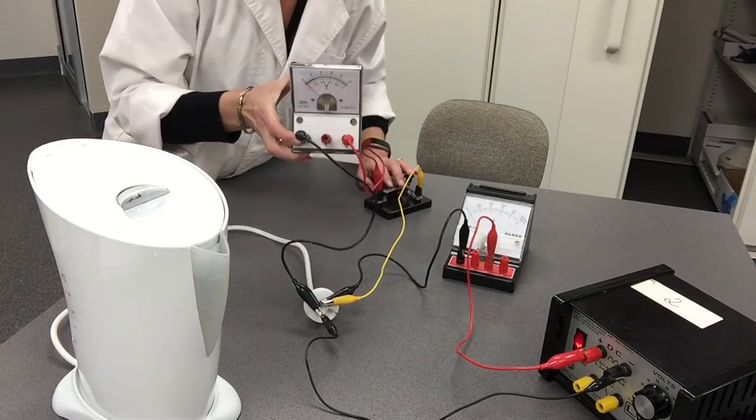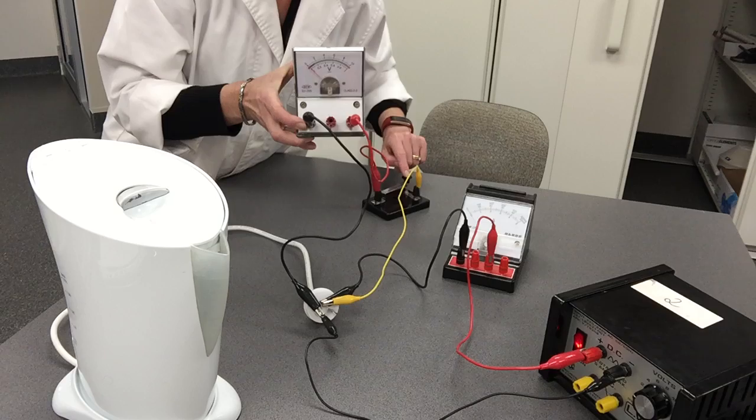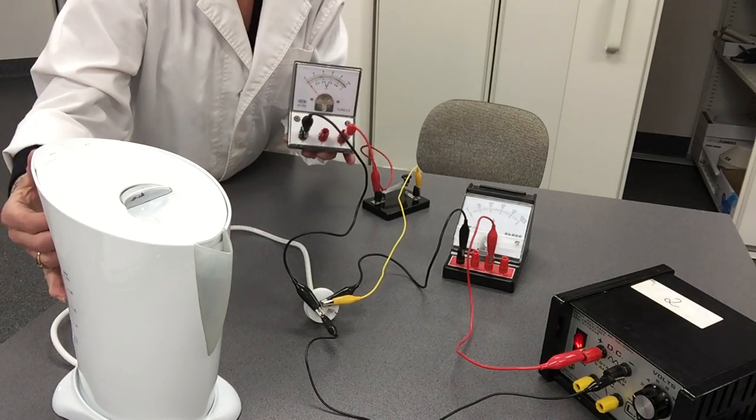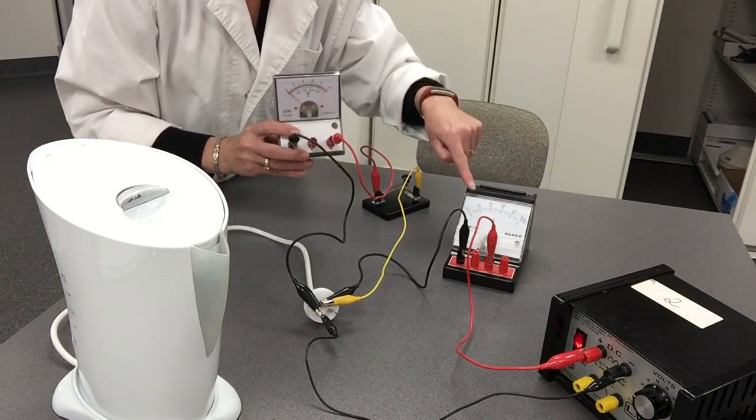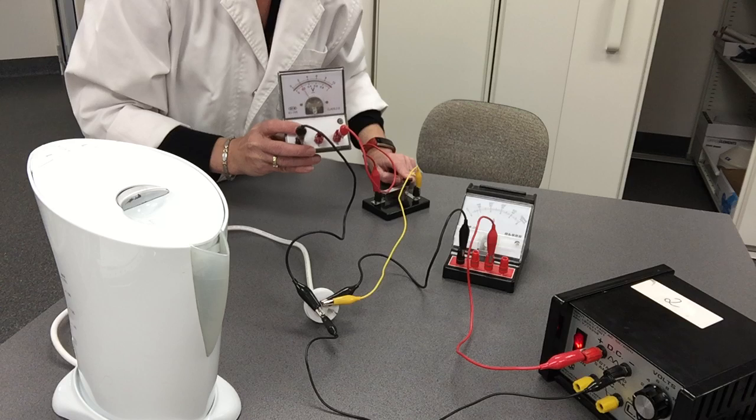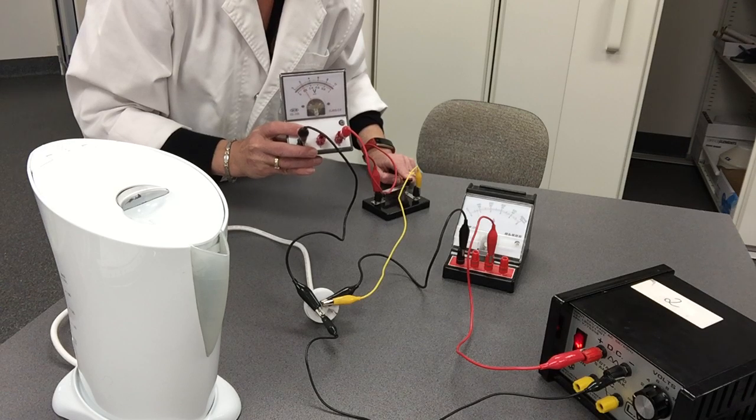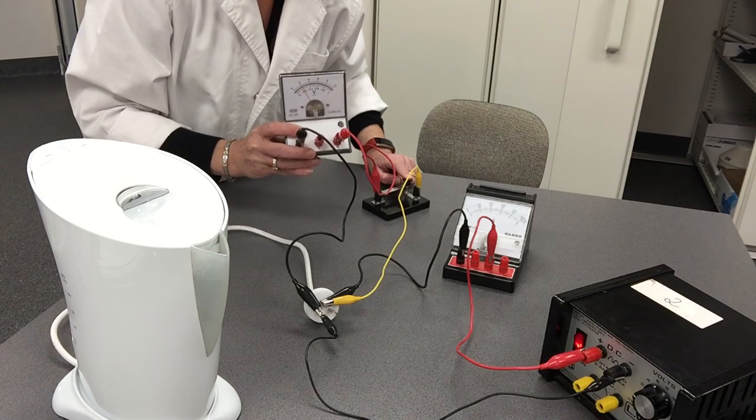So to do that I need to turn my kettle on, got my ammeter reading, and then turn my voltmeter on. Turn my switch and I get my voltmeter reading.